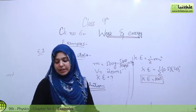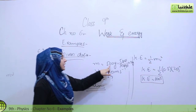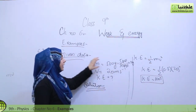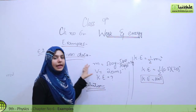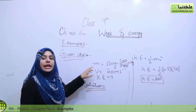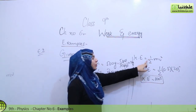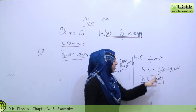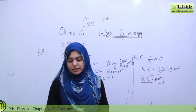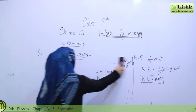So the kinetic energy was 100 joules. We took a stone of mass 500 grams, converted it to 0.5 kg, it struck the ground with velocity 20 m/s, and using the formula half mv² we found kinetic energy equals 100 joules. Now we will start example number 6.3.